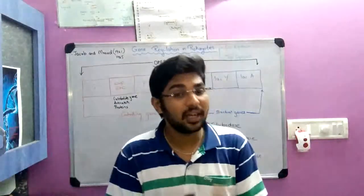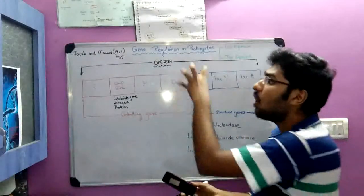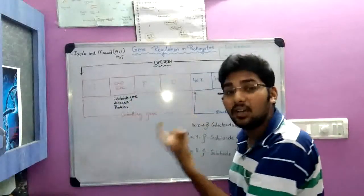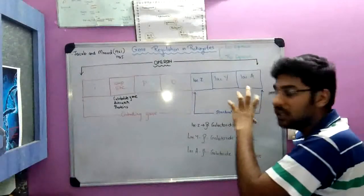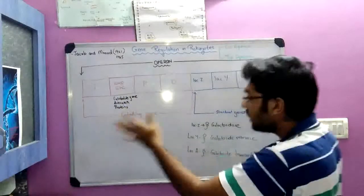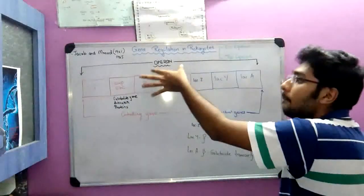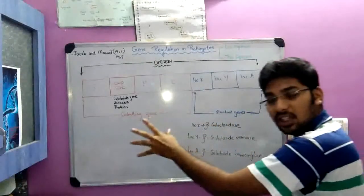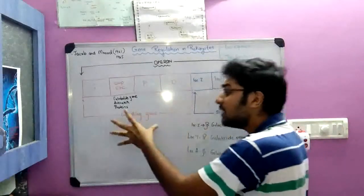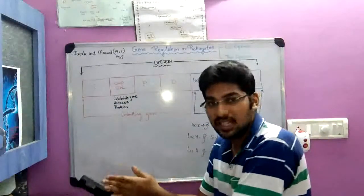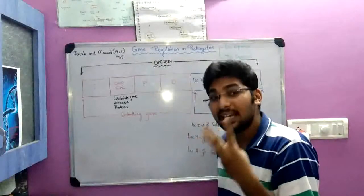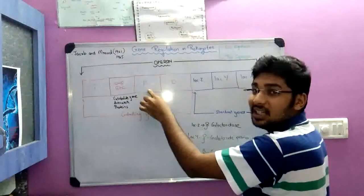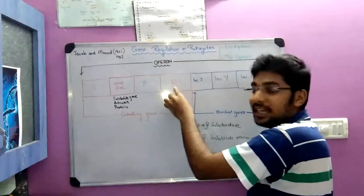Operon means a cluster or collection of genes. Operon can be broadly categorized into two groups: the controlling gene and the structural gene. The controlling gene, as the name indicates, controls the other genes. It is further broken down into three classes: the regulatory gene (indicated by I), the promoter gene (indicated by P), and the operator gene (indicated by O).